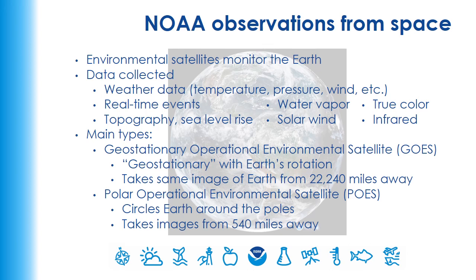NOAA has environmental satellites that monitor the earth. The data collected by these satellites can be used in weather forecasting, monitoring ocean health, and even sea level rise. NOAA has two main types of satellites. The Geostationary Operational Environmental Satellites, or GOES, are geostationary with the earth's rotation, meaning they always look at the same part of the earth. We also have polar orbiting satellites that circle the earth around the poles and collect data from the entire planet.